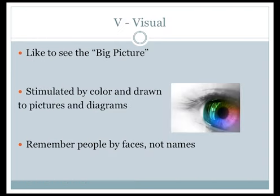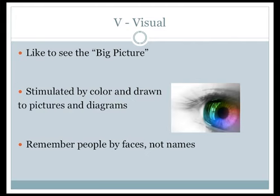If you think you might be a visual learner, answer the following questions: Do you have to see information in order to remember it? Do you pay close attention to body language? Do art, beauty, and aesthetics inspire you? Does visualizing information in your mind help you to remember it better? If you can answer yes to most of these questions, chances are you have a good visual learning style. Often visual learners prefer to see the big picture — they're stimulated by color and drawn to pictures and diagrams. They also remember people best by faces and not names.